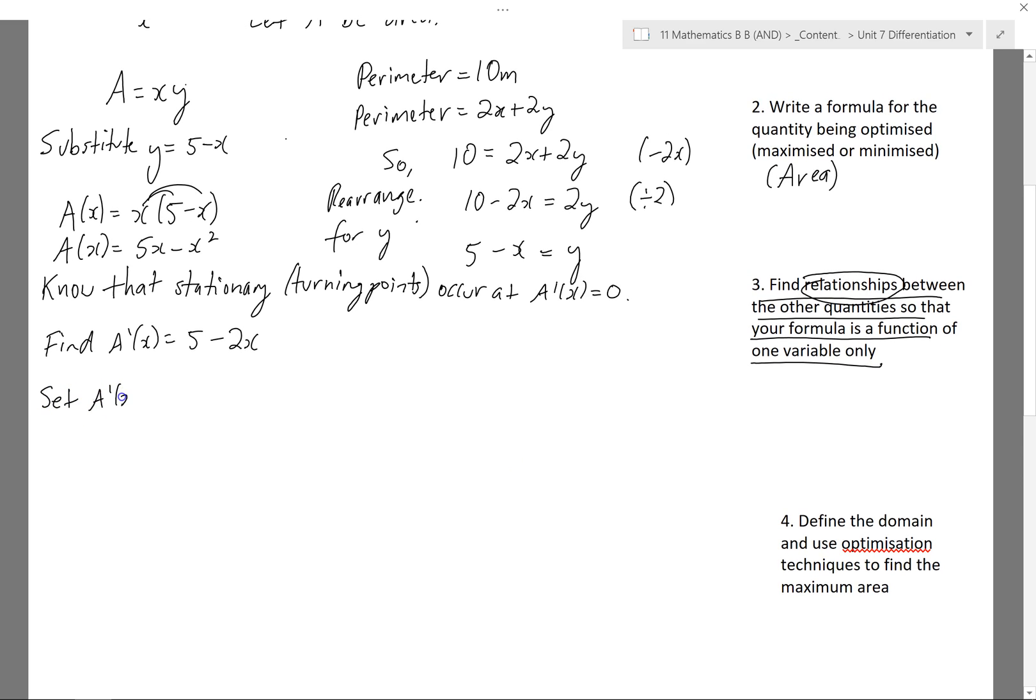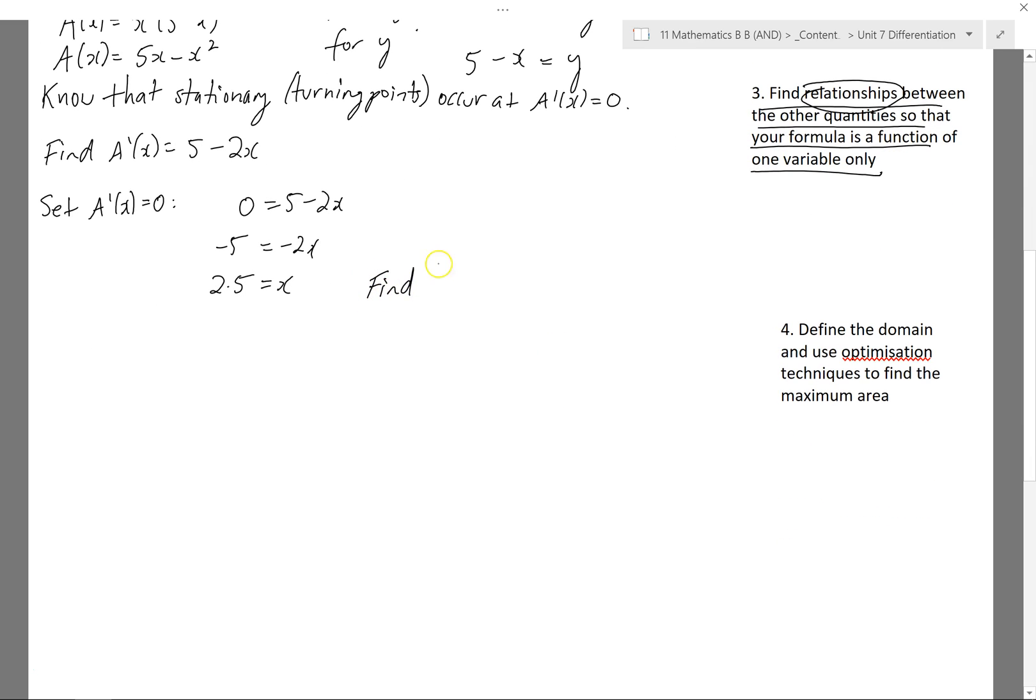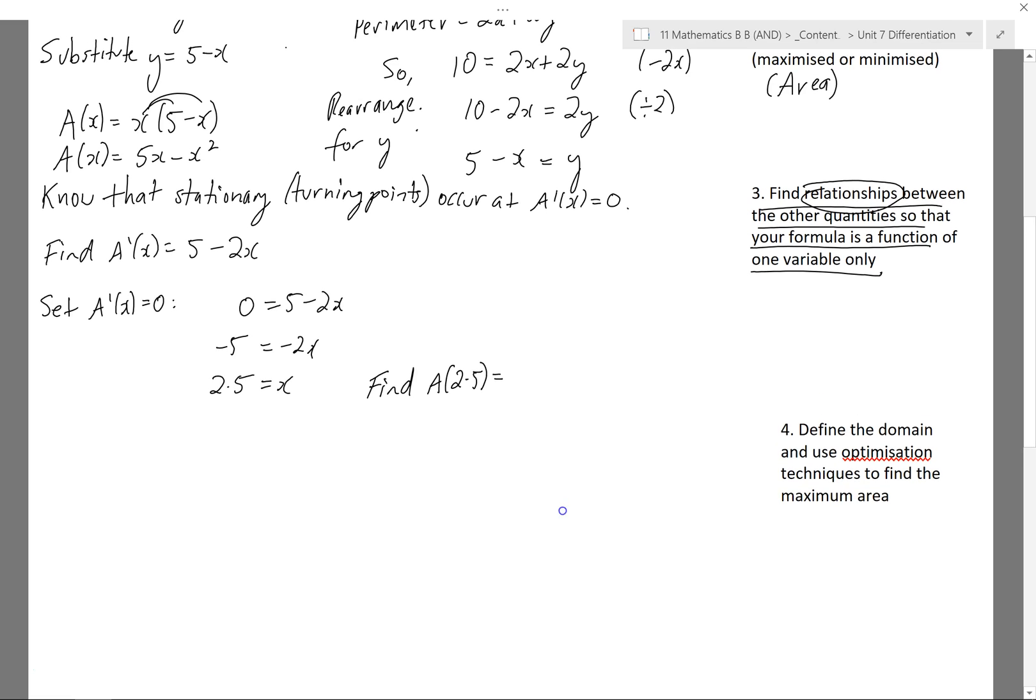And then I'm going to set A'(x) equal to 0. So 0 equals 5 minus 2x, and I'm going to solve here. So I've got x equals 2.5. So at this point, what I know is that there's a turning point at x equals 2.5. I'm not sure whether it's a maximum, minimum or point of inflection. So I'll need to find the corresponding area, so find what the area is at 2.5, just so I can state this as a point. So I'll put this into my area function, which is 5x minus x squared, and I'll get an area of 6.25. So at the moment, I know that 2.5, 6.25 is a turning point.